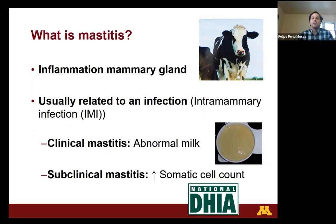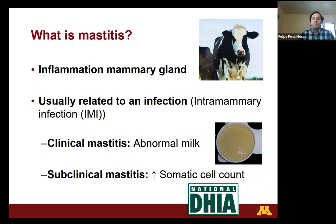Mastitis has two different presentations. The first is what we call clinical mastitis, recognized by the presence of abnormal milk such as milk clots or watery milk, and changes in milk color. This can also present with signs of local inflammation such as swollen mammary quarters, and in severe cases general symptoms such as fever, reduced or dramatic drop in feed intake, or even the death of the animal.